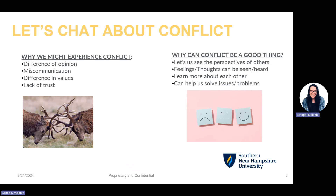Sometimes conflict can actually be a good thing. We need conflict to happen so we can see the perspective of others — it allows people to feel seen and heard, to express feelings and emotions. We can learn a lot about each other, and conflict can help us solve issues or problems by seeing the full picture of how everybody feels and why. So don't just think of conflict as an argument or a fight.